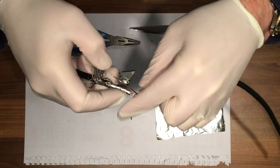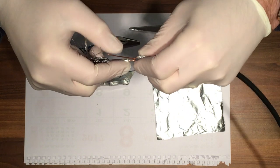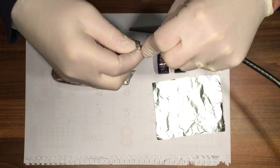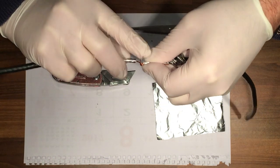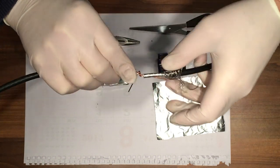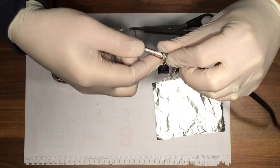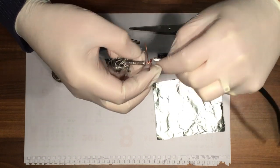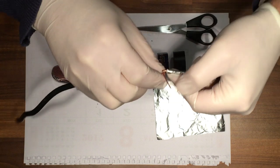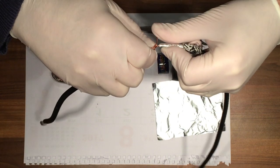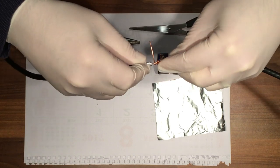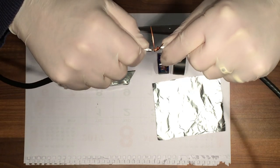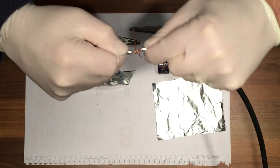Bend them in together and twist. Twist it around and the same with the other one. Twist it the opposite way so they lock into each other, so when you pull them they won't pull apart.